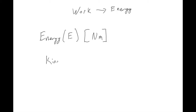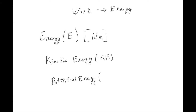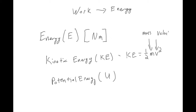There are many types of energy, but for this class we'll focus on kinetic energy and potential energy. Kinetic energy is written as KE, and potential energy is usually written as U. The formula for kinetic energy is always one half m v squared, where m is mass and v is velocity. This is a scalar.